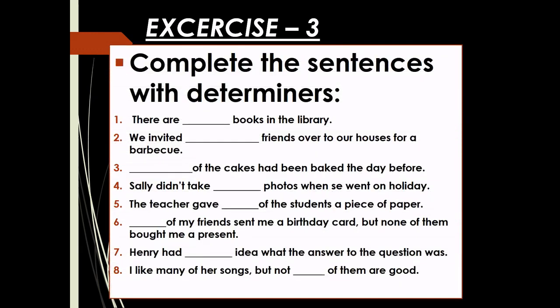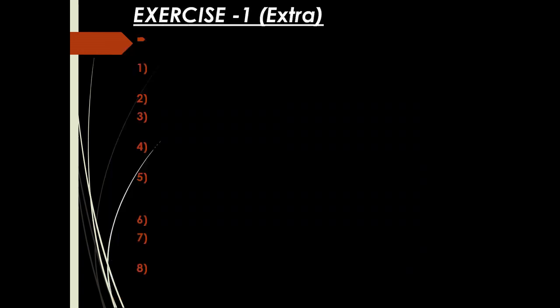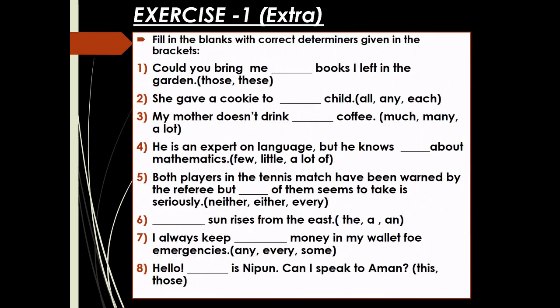Exercise number 3 is: complete the sentences with determiners. Exercise 1 is extra, given by me: fill in the blanks with correct determiners given in the brackets. Do your homework in neat and clean handwriting. This is the end of the lecture. Thank you and have a nice day.